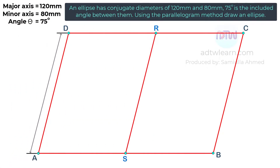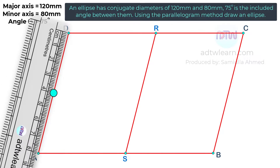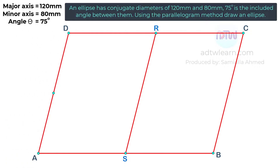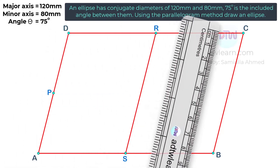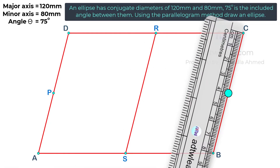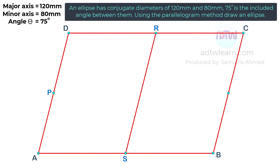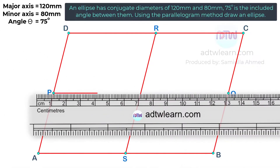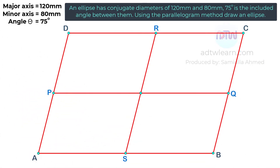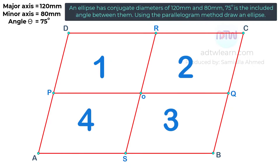Next, we know the height is 80 millimeters, and half of 80 millimeters will be 40 millimeters. Take a ruler and mark 40 millimeters from the top and name this point as P. Similarly, mark another point on this vertical line at 40 millimeters and name this point as Q. Mark this intersection point at the center as O. Therefore, we got four equal parts of this parallelogram.